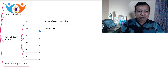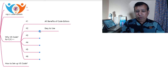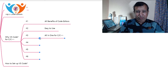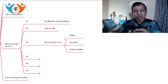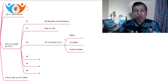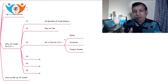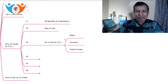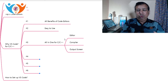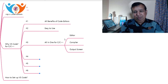Reason number three: VS Code is all-in-one for C and C++ programming. For C and C++ programming we need three things: first, the editor where we write the actual program; second, a compiler that compiles the written program, checks for syntactical errors, and converts it to an object file; and third, the output screen where the result is displayed when running a program. All three of these are available inside VS Code, so you don't need to leave the editor.